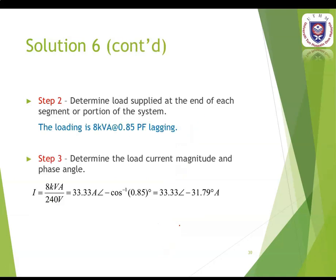The second step is to determine the load supply at the end of each segment or portion of the system. In this case the load is 8 kVA, which is the apparent power with 0.85 power factor lagging. The third step is to identify the load current magnitude and the phase angle. For single phase, current equals apparent power divided by voltage. You get the current value 33.33 at angle negative 31.79 degrees ampere.